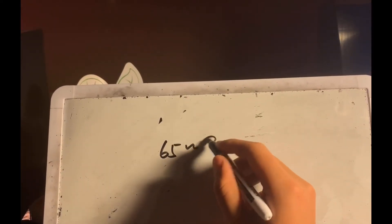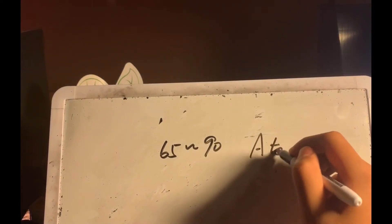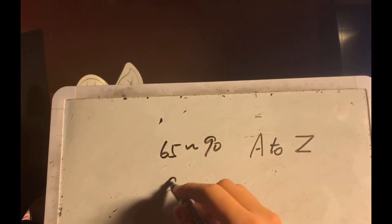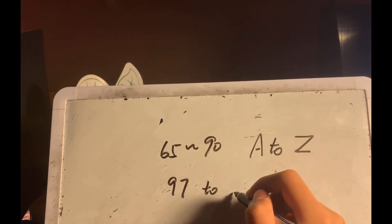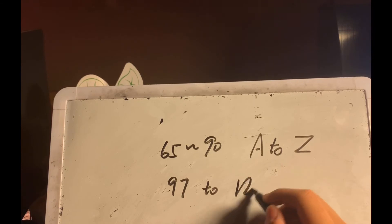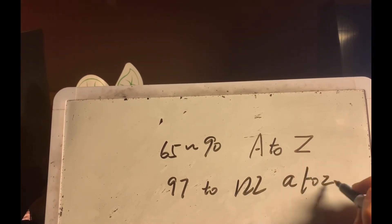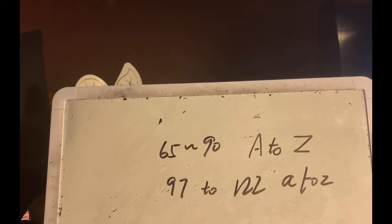To do this, we need to first know about ASCII code. The ASCII code is a number representation of a certain character. For example, 65 to 90 is A to Z, while 97 to 122 is small a to z. This is a problem that you need to understand.